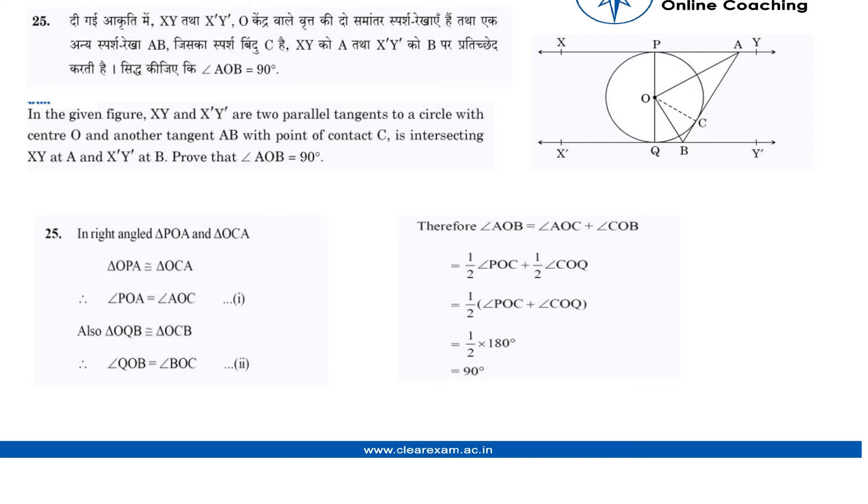To solve this, we consider triangle POA and triangle OCA. In these triangles, using the CPCT method, OA is common, and angle POA and angle AOC are equal to each other.